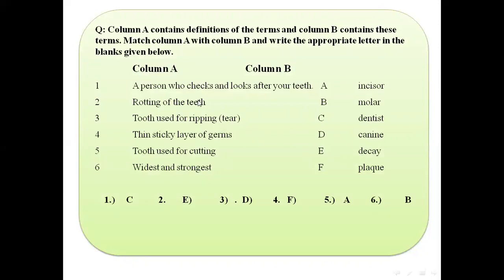So number two you match with number E. Number three: tooth used for wiping or tearing the food. Which tooth is used for wiping or tearing? The options are incisor, molar, dentist, or canine. Canine is the correct answer, so number three you match with number D.